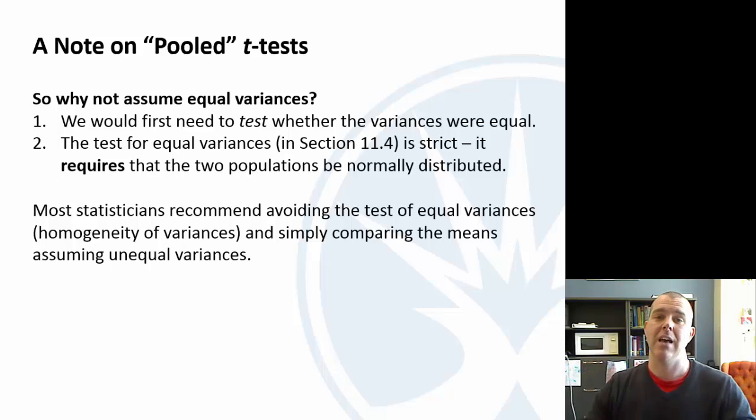So that's the reason why we don't pool those t-tests as a default. You can, but you have to test the variances first. All right, so that's it from comparing two population means from independent samples.